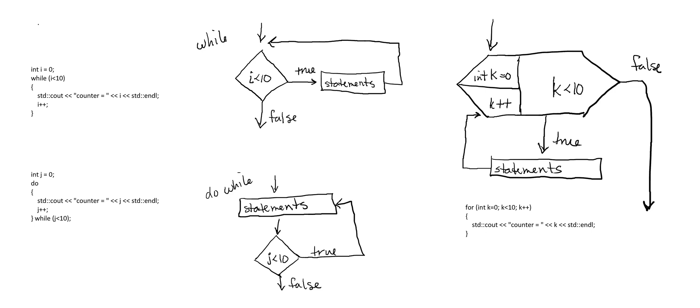The for loop looked complicated, and there are several different ways we can do for loops. But the for loop is nice because everything is all within one block. What's coming in hits the first part of the for loop: int k equals zero, setting up the variable. Then it flows into the conditional — is k less than 10? If true, it runs the statements, but then it only runs the increment or decrement at the end of your for statement, not going all the way back to the initialization.